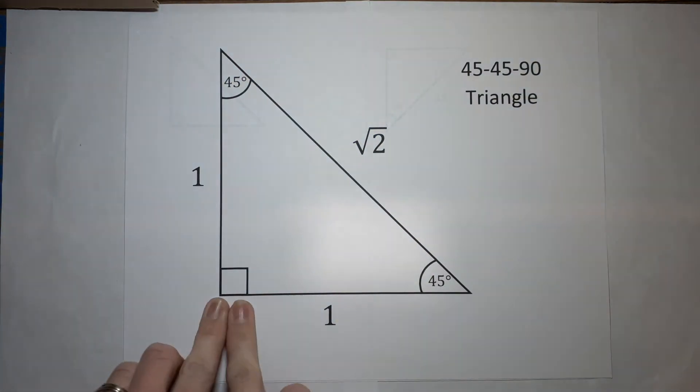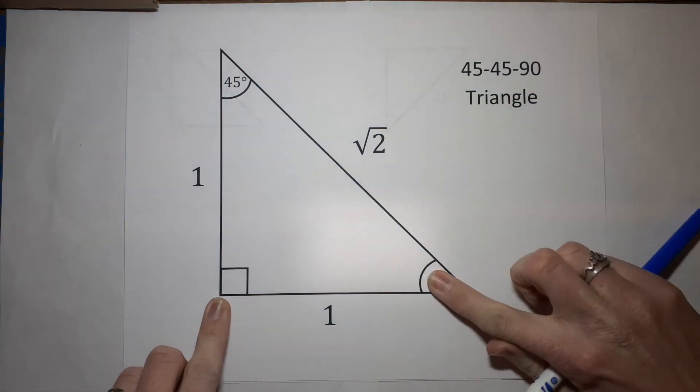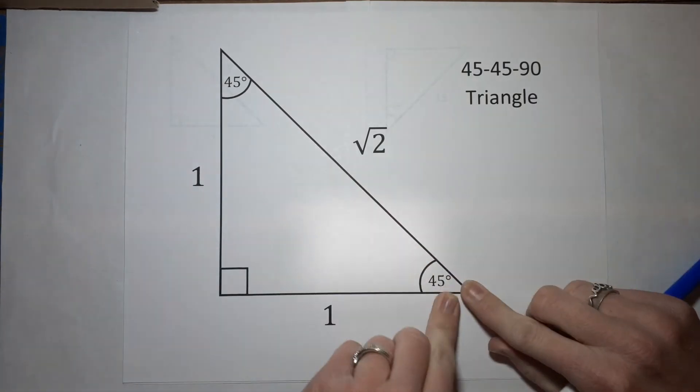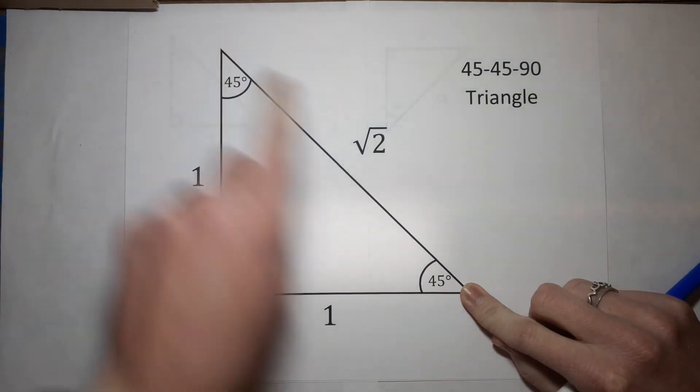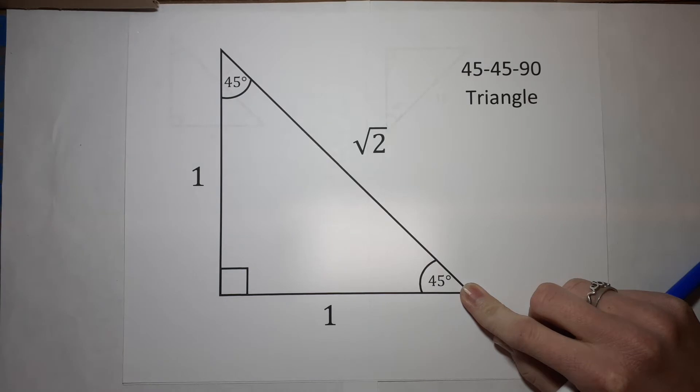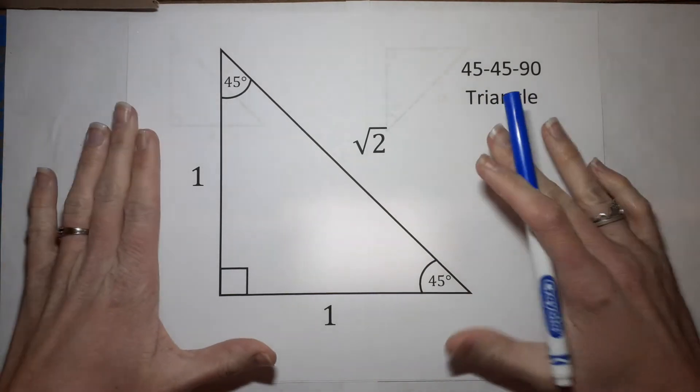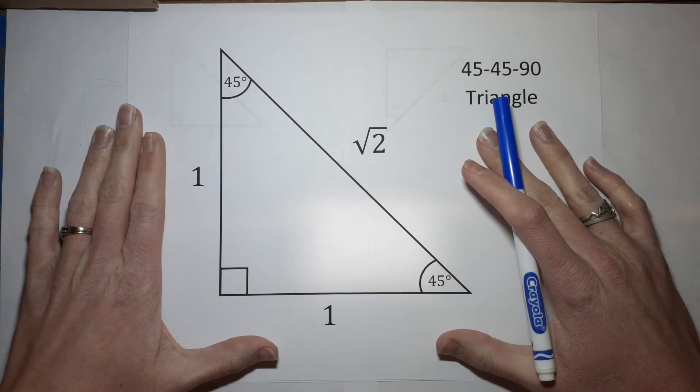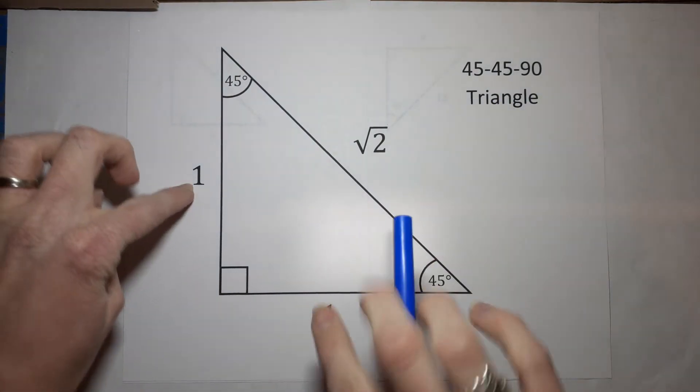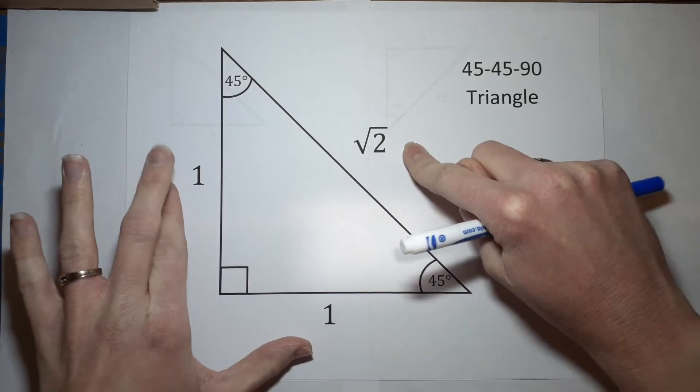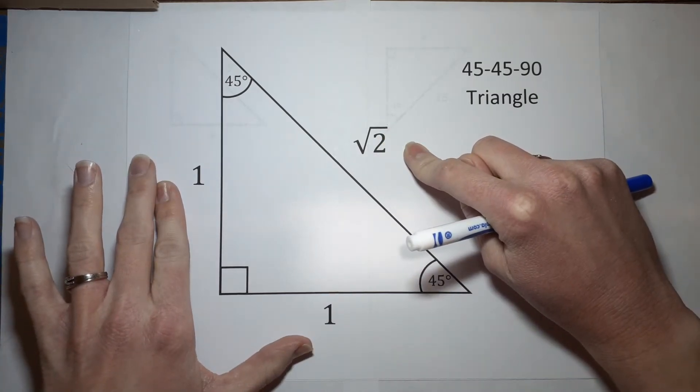So if I have 90, and if I didn't know this angle, but I knew it was 90 and 45, then I also know this one is 45 because 90 plus 45 plus 45 equals 180. Now, why do we care about this? Well, because the sides are always equal to these proportions.